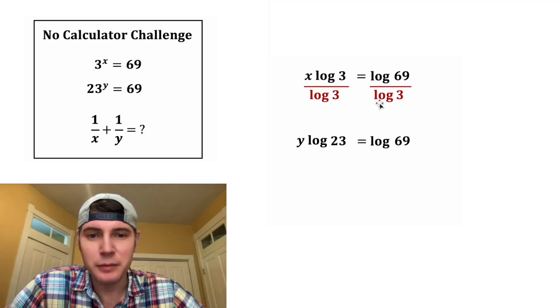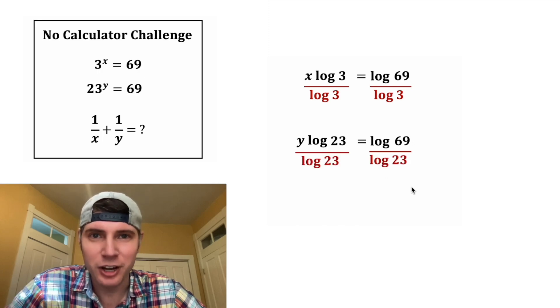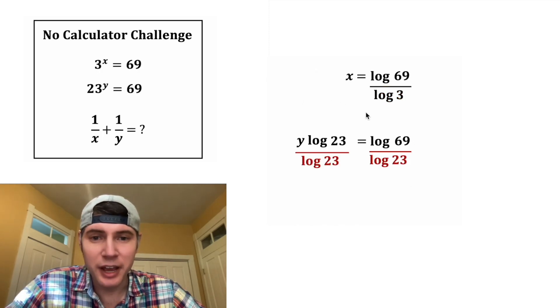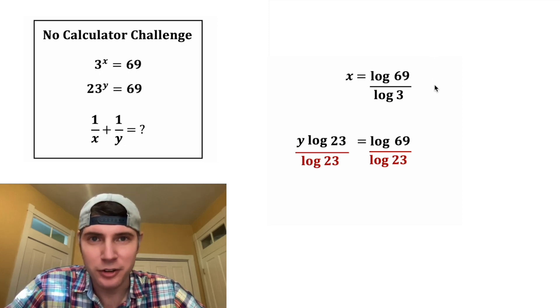Now log 3 is a number, so we can divide both sides by log 3. And we can do the same thing down here, divide both sides by log 23. This log 3 over log 3 will cancel out. And so now we know x equals log 69 over log 3.